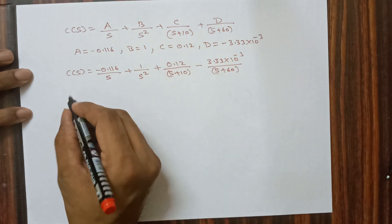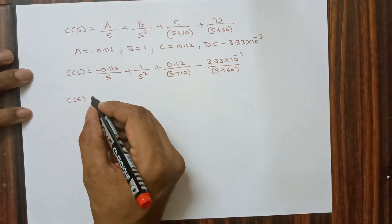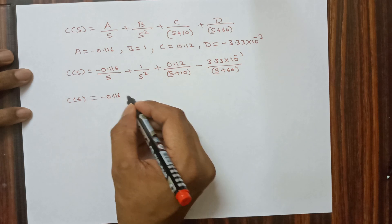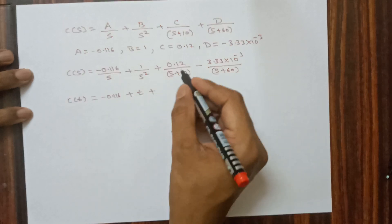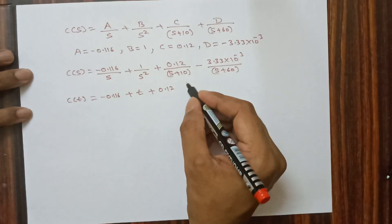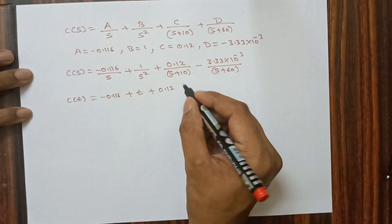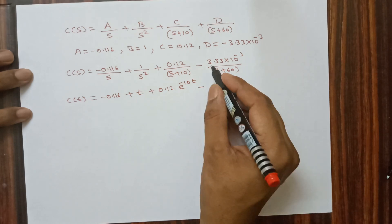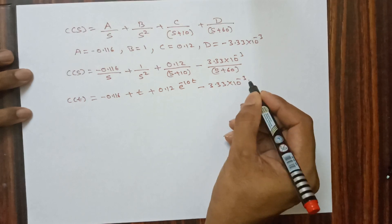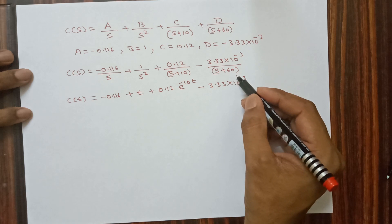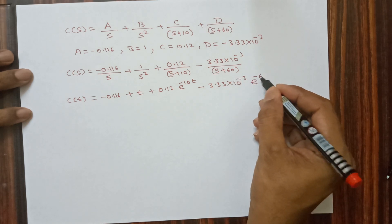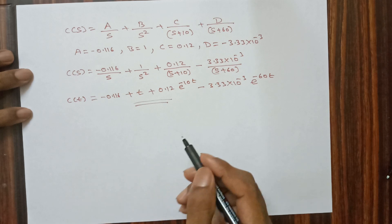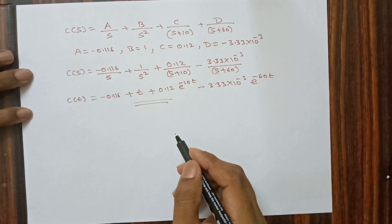Applying the inverse Laplace transform, the output equation C(t) = -0.116 + t + 0.12·e^(-10t) - 3.33×10⁻³·e^(-60t). This is the output equation for unit ramp input. Hope you understood this problem. For more such videos, like and subscribe to my channel. Thank you.